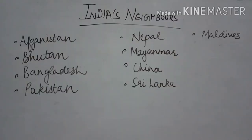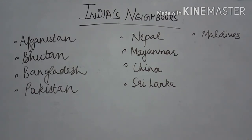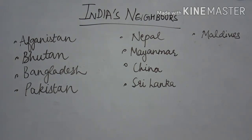India's neighboring countries are Afghanistan, Bhutan, Bangladesh, Pakistan, Nepal, Myanmar, China, Sri Lanka, and Maldives — a total of 9 neighboring countries. On the northwest side, India shares its boundaries with Pakistan and Afghanistan.